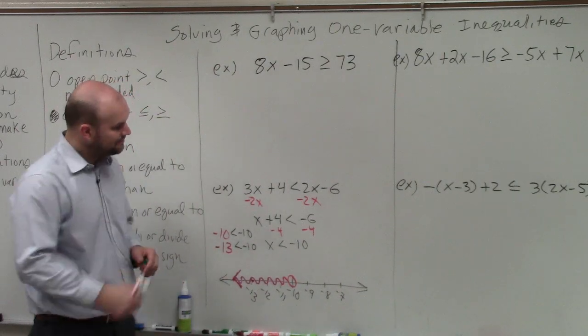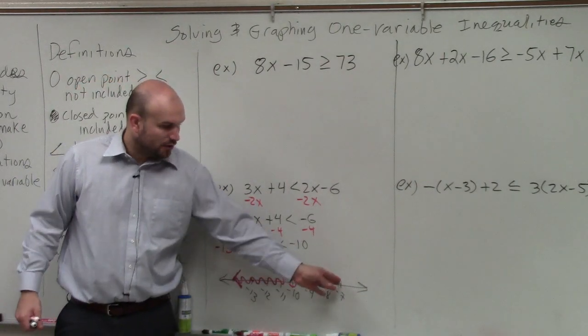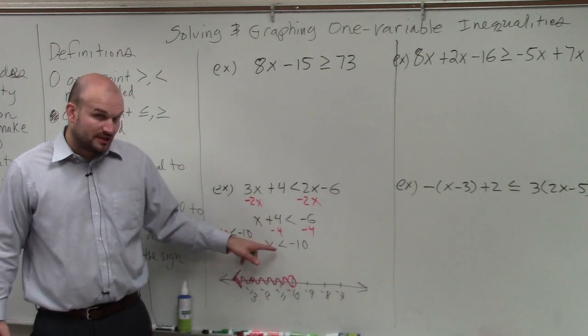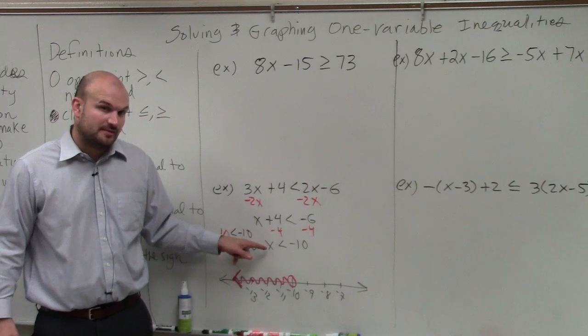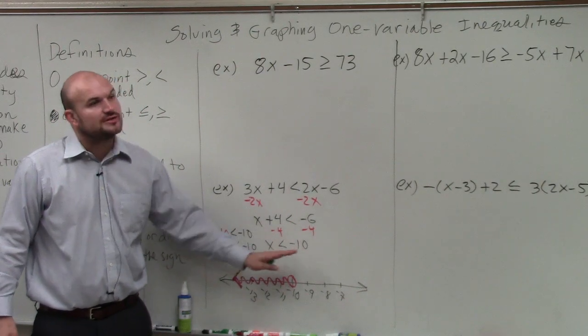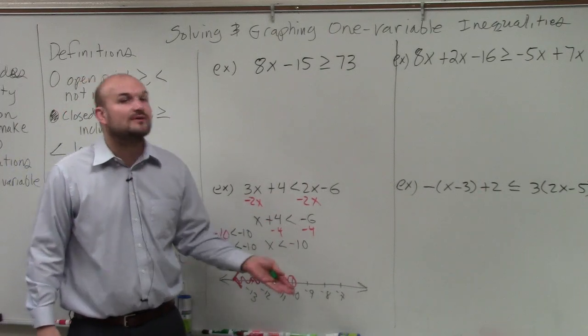All numbers to the left are going to make this true. If it over here would all be the values that are false. You can also look at the inequality symbol. As long as you solve for the variable on the left-hand side, then the inequality symbol is also going to point to the values. And I always like to say it out loud.